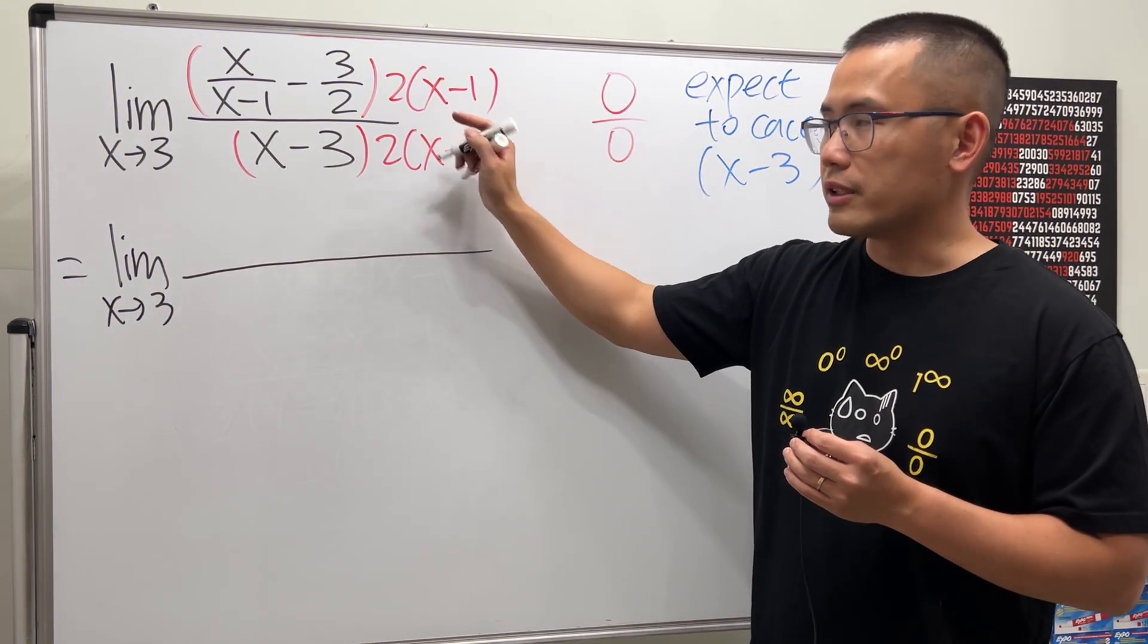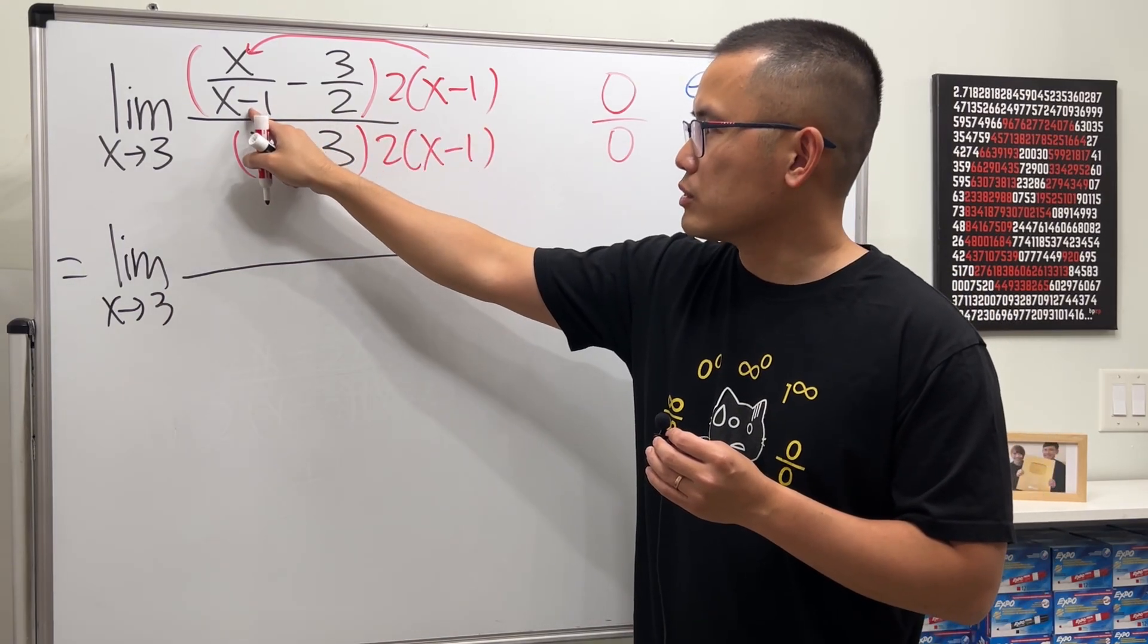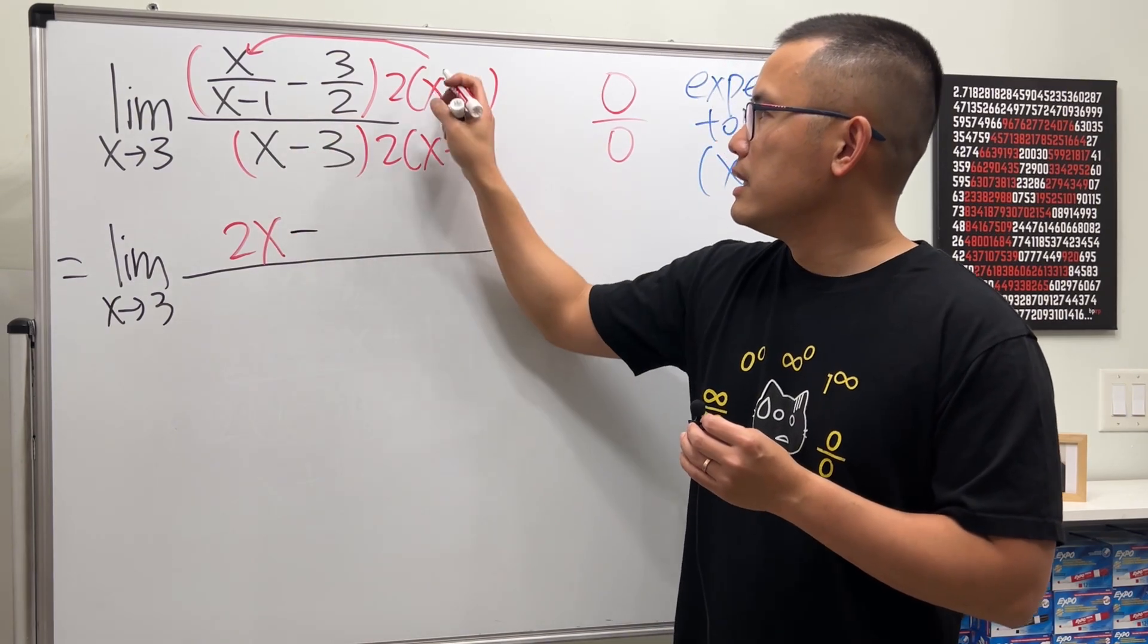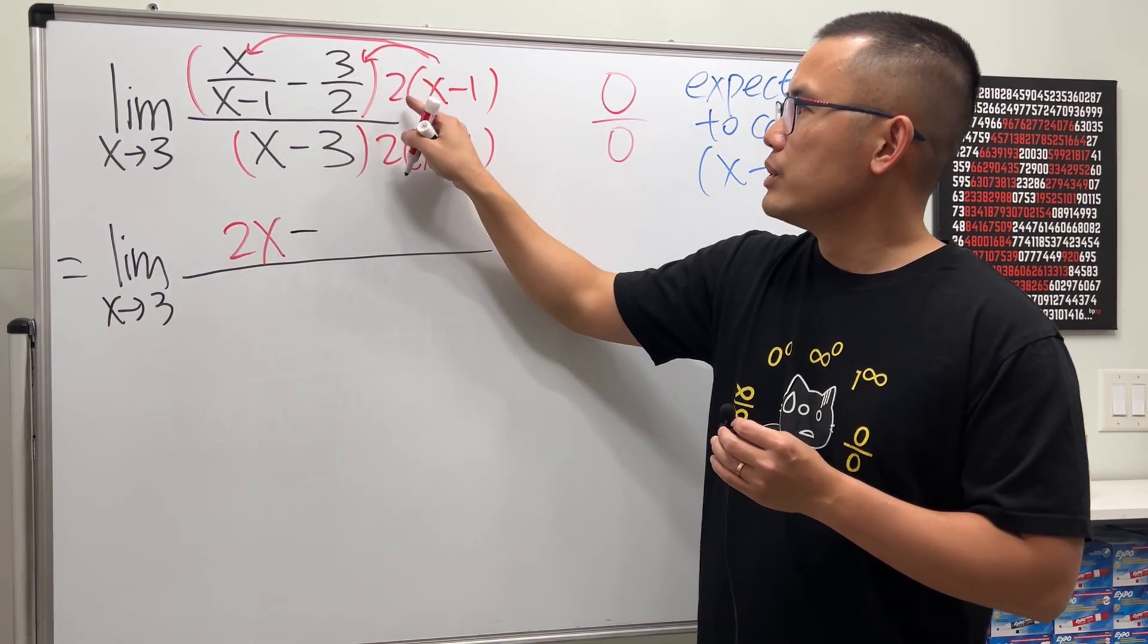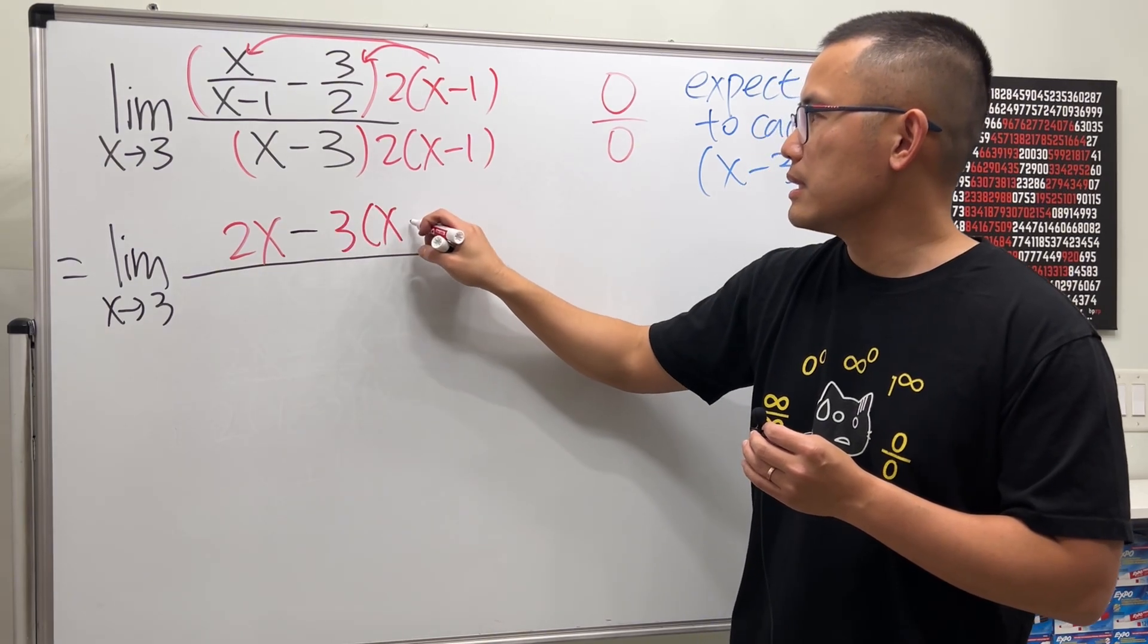I'm just going to multiply the top. Take this times the first term, the x minus 1 will cancel. We will just have 2x. Minus, take this times that, 2 and 2 cancel, so we have minus 3 times x minus 1.